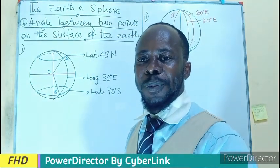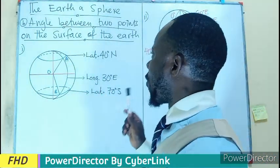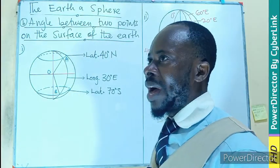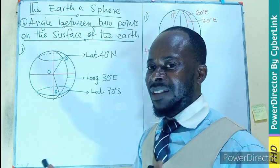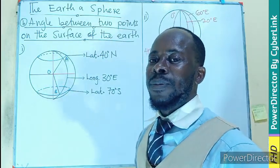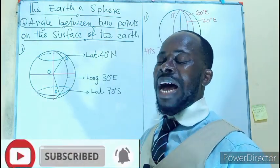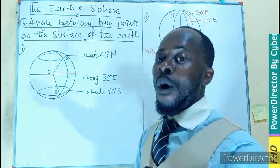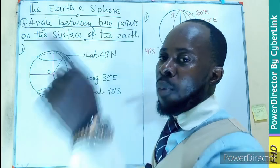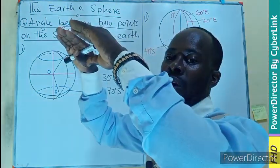Welcome to episode number two — The Edge as a Sphere. We want to find the angle between two points on the surface of the Earth, where the sphere is considered to be the edge. Remember, in describing a point on the sphere we consider the latitude before the longitude. Longitudes run from north to south, bordering to the east or west, while latitudes run from west to east, moving closer to the north or south.